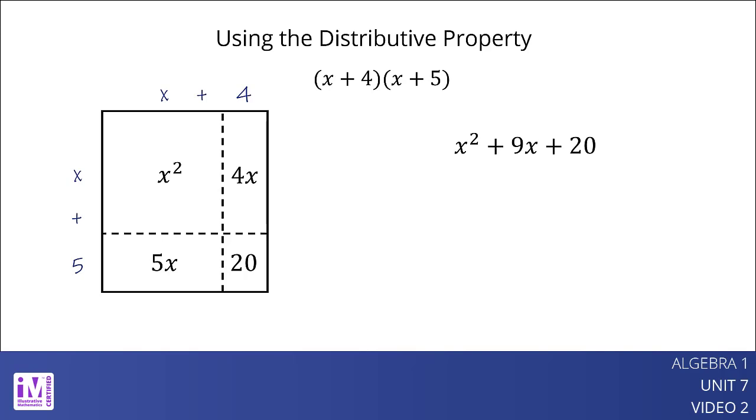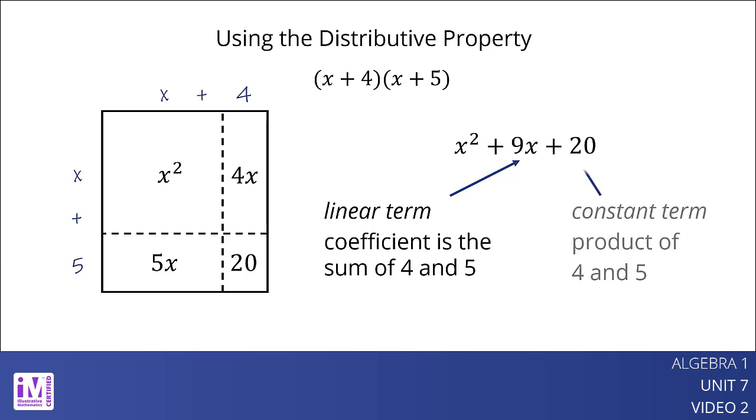Notice that the linear term, 9x, has a coefficient of 9, which is the sum of 4 and 5. The constant term, 20, is the product of 4 and 5.